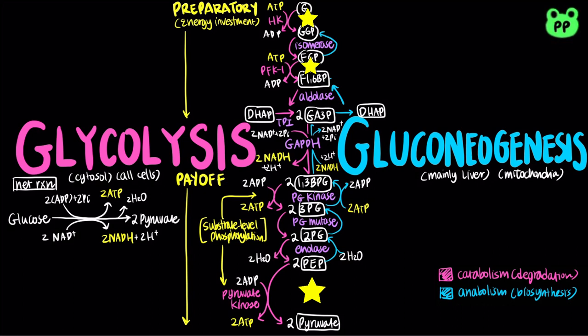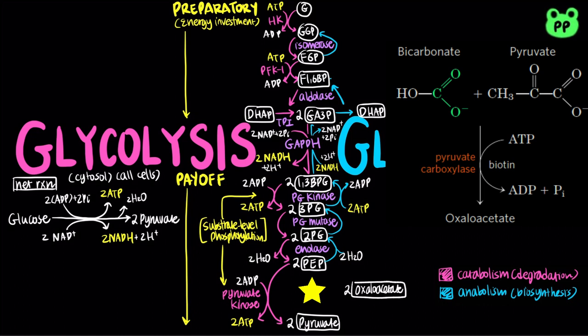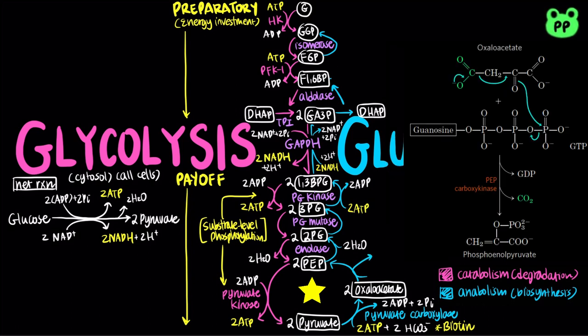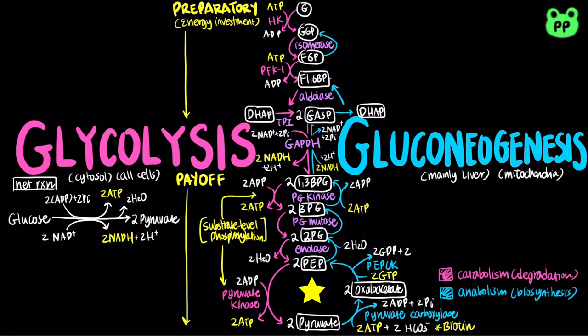Gluconeogenesis is an anabolic pathway, meaning synthesis of molecules, and it is labeled in blue. The first bypass reaction in gluconeogenesis is the conversion of pyruvate to phosphoenolpyruvate, and it involves two enzymes. First, pyruvate carboxylase adds a carboxyl group to pyruvate, with the coenzyme biotin as the carrier of activated bicarbonate, producing oxaloacetate, a 4-carbon molecule. Since this reaction is endergonic, it is coupled to the cleavage of ATP. Oxaloacetate is then decarboxylated and phosphorylated by phosphoenolpyruvate carboxykinase, named for the reverse reaction, which requires GTP as the phosphoryl group donor. Together, pyruvate carboxylase and PEP carboxykinase serve as the bypass for pyruvate kinase.